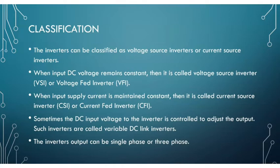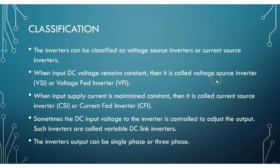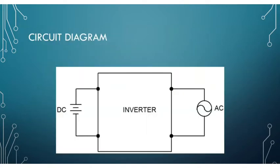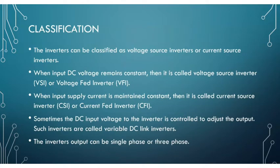Based on voltage sourcing and current sourcing, inverters can be classified as voltage source inverters or current source inverters. When the input DC voltage remains constant, it is called a voltage source inverter or voltage fed inverter. When the input supply current is maintained as constant, it is called a current source inverter or current fed inverter.